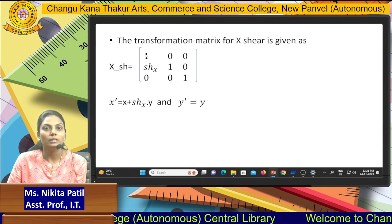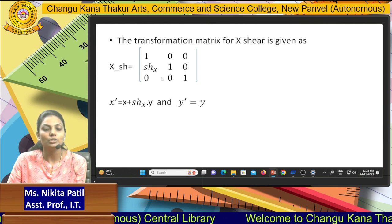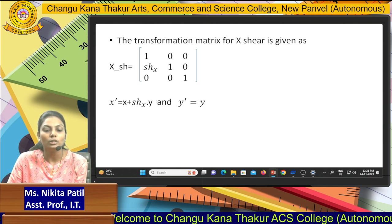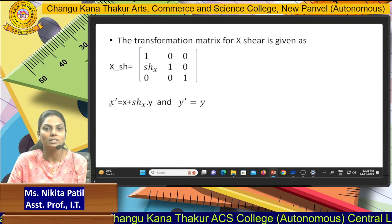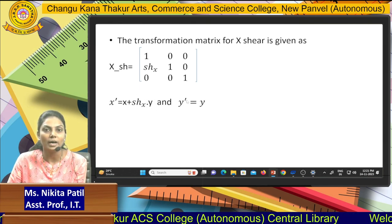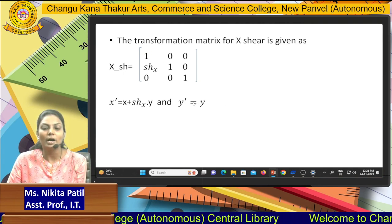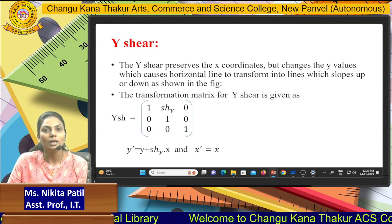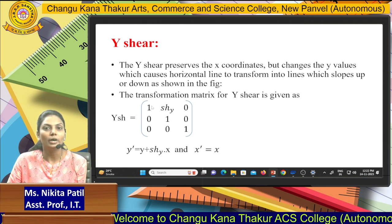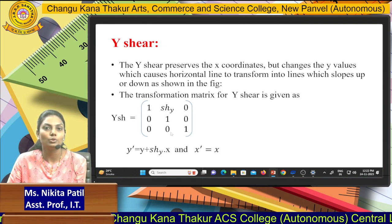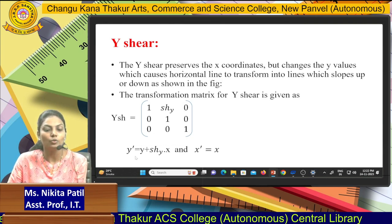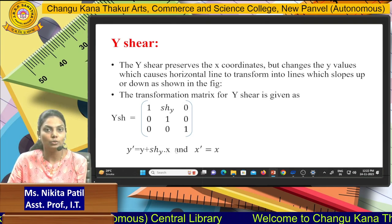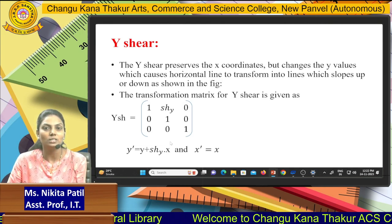The main equations for shearing: For x-shear, the transformation matrix is [1, shx, 0; 0, 1, 0; 0, 0, 1], giving x' = x + shx × y. Because we are shearing the x-axis, we multiply by y. For y-shear, the matrix is [1, 0, 0; shy, 1, 0; 0, 0, 1], giving y' = y + shy × x — here we multiply by x. And x' = x remains unchanged.